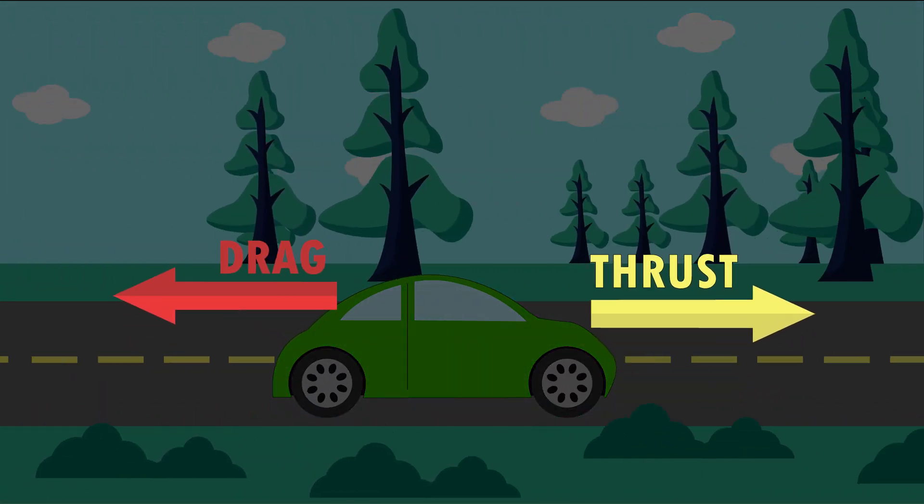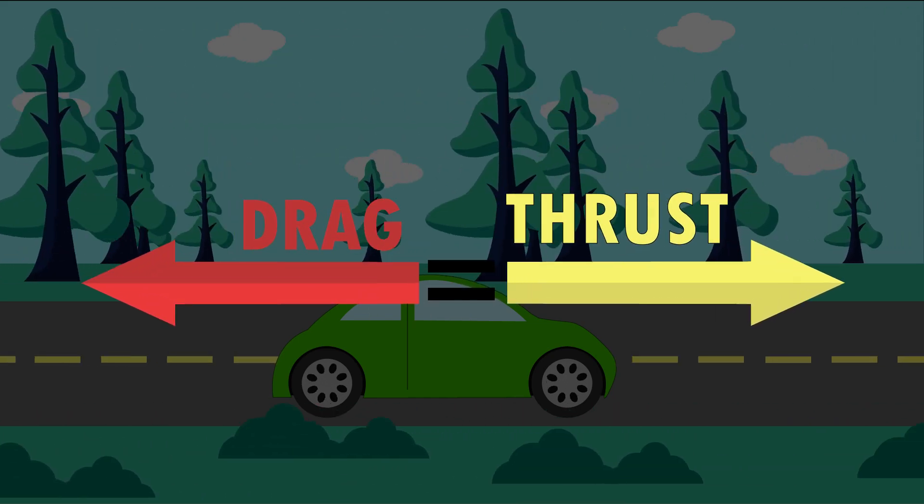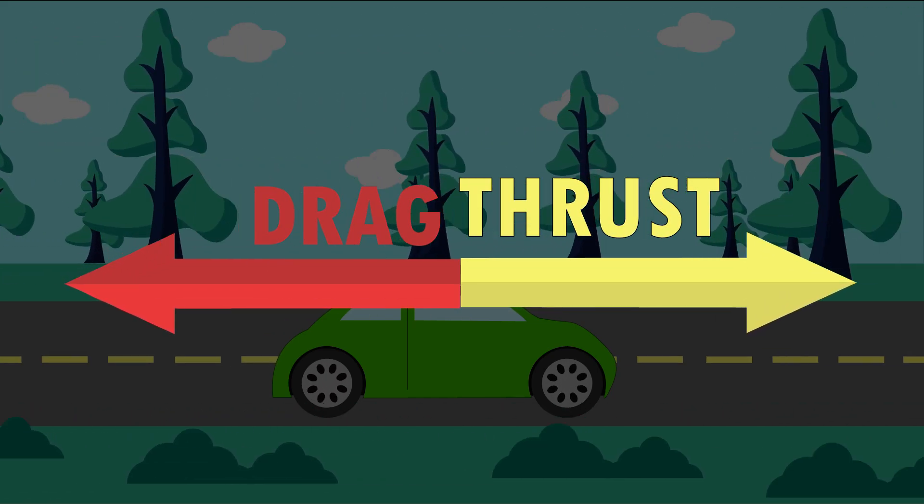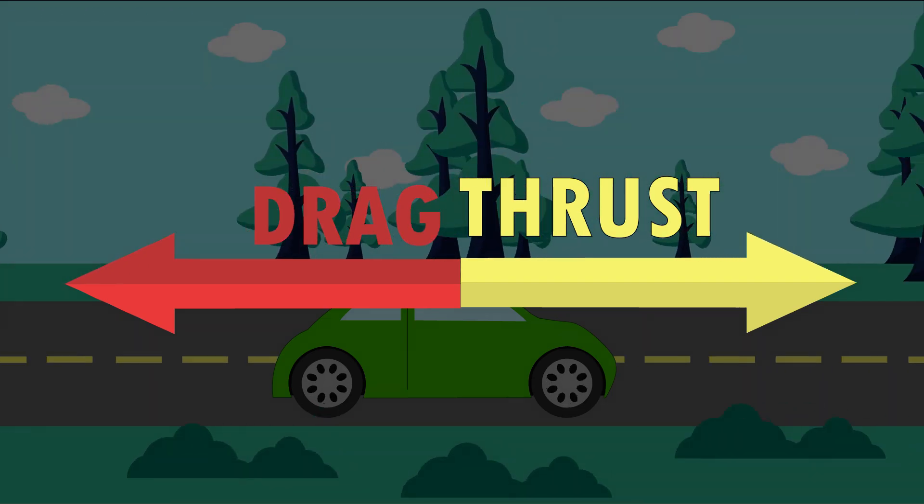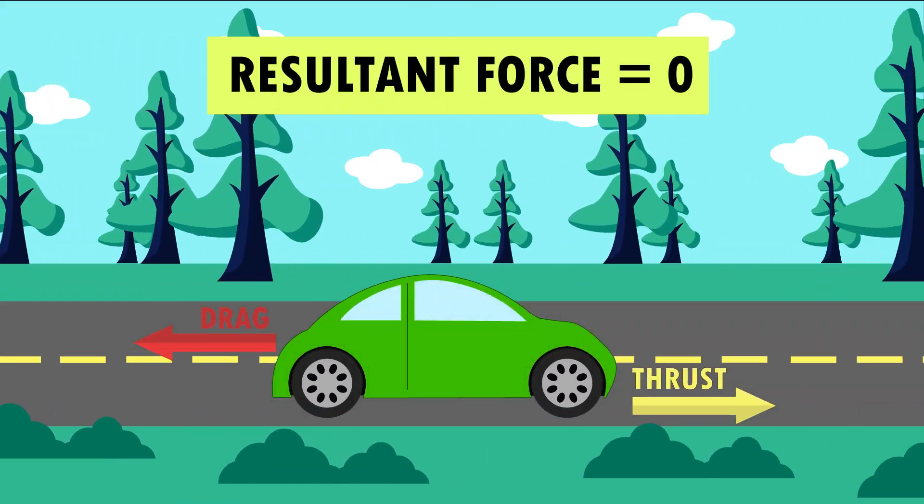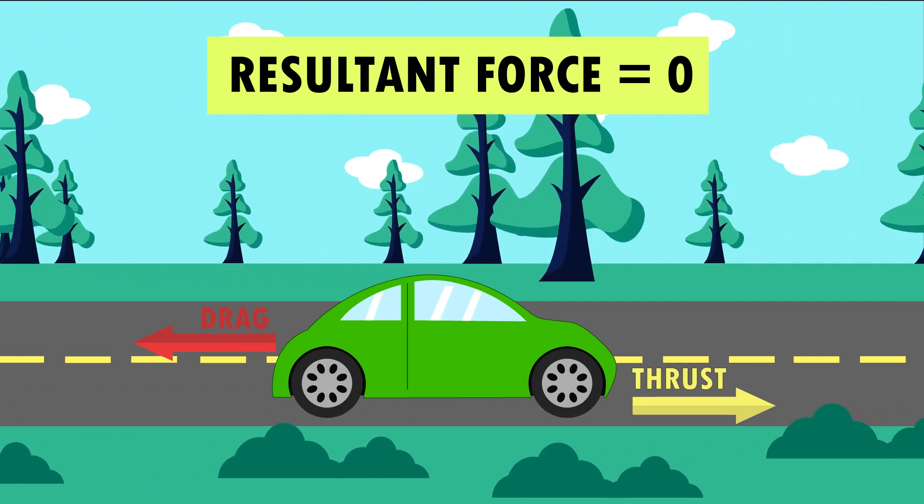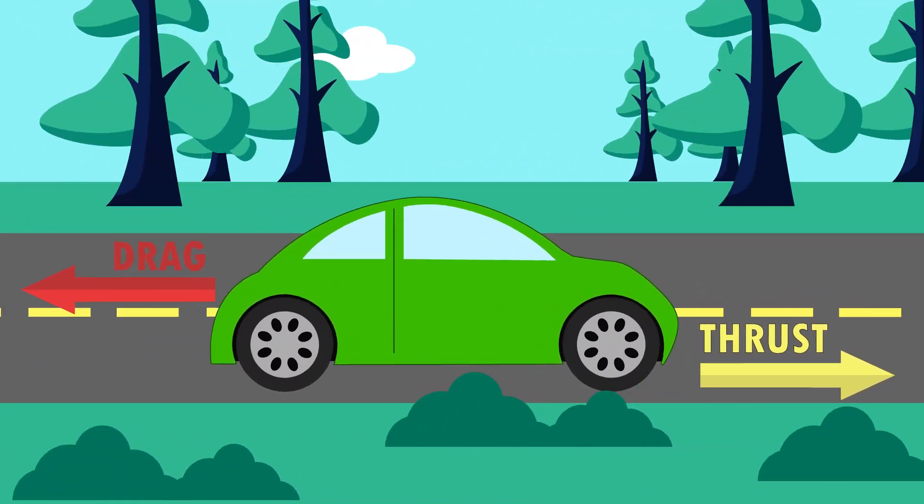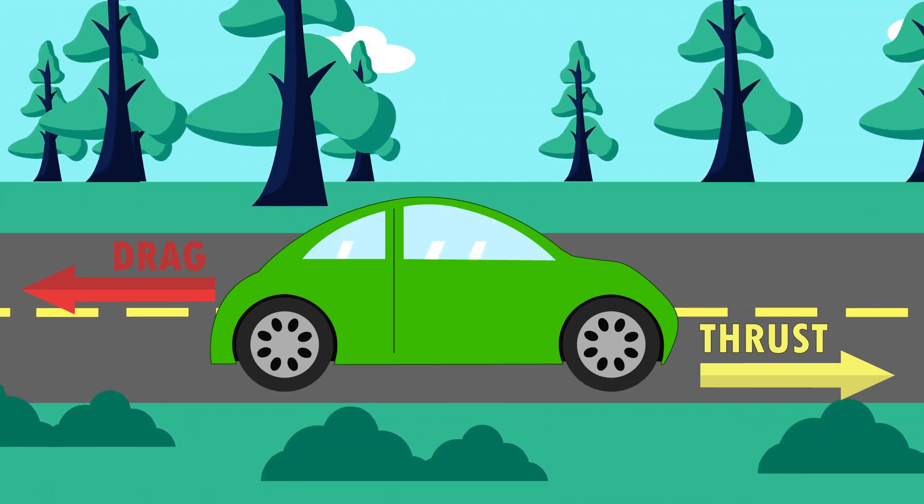Eventually, the drag force will be equal and opposite to the thrust force, which means the forces are balanced. This means there's zero resultant force. So the car will now carry on moving at a constant speed. This is the maximum speed the car can go.